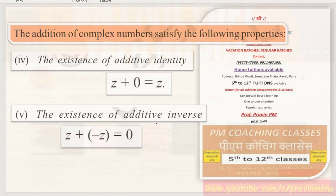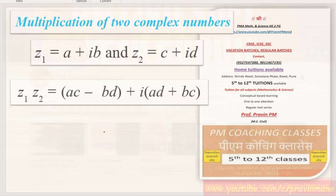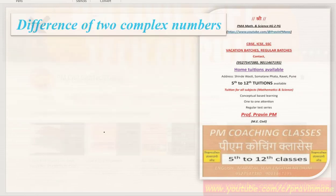Additive inverse means it is the opposite value of a given number. Suppose z is a number; its additive inverse is minus z. When we add the additive inverse to any number, the answer becomes zero. Only then can we say the added number is the additive inverse of the previous number.